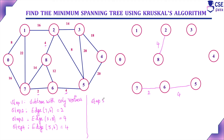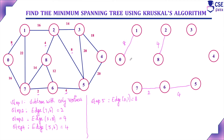Step 5: the next minimum cost edges are 0,1 with cost 8 and 2,5 with cost 8. In each step we must check whether including an edge forms a cycle. We have included three edges so far and none form a cycle. In order, we consider edge 0,1 with cost 8 first — its inclusion does not form a cycle, so we include it.